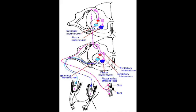As with the stretch reflex, this interneuron releases inhibitory neurotransmitters which hyperpolarise the membrane potential of the postsynaptic cell. This increases the threshold and prevents the antagonist muscle from contracting, prevents a signal travelling down those fibres, and prevents it from firing and thus contracting. This is particularly important because it keeps the antagonist muscle relaxed and allows for optimum contraction.